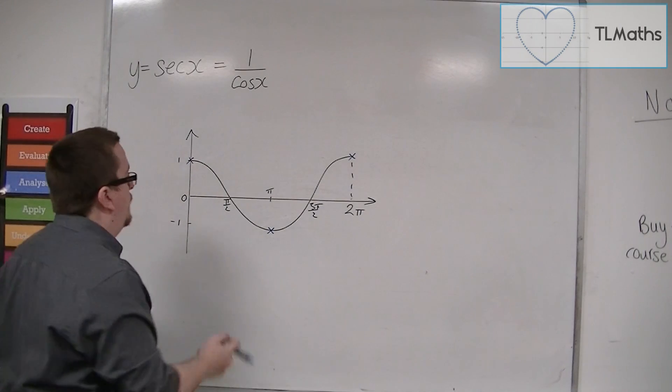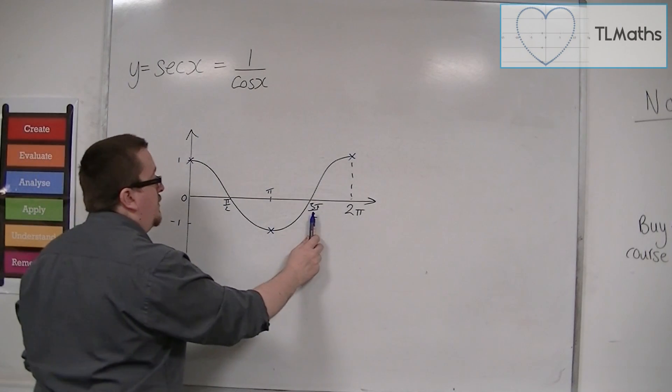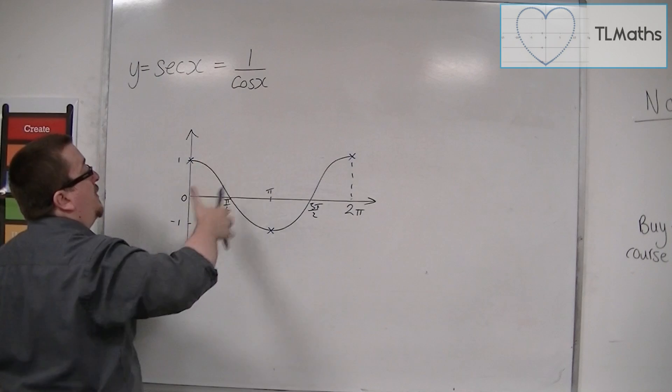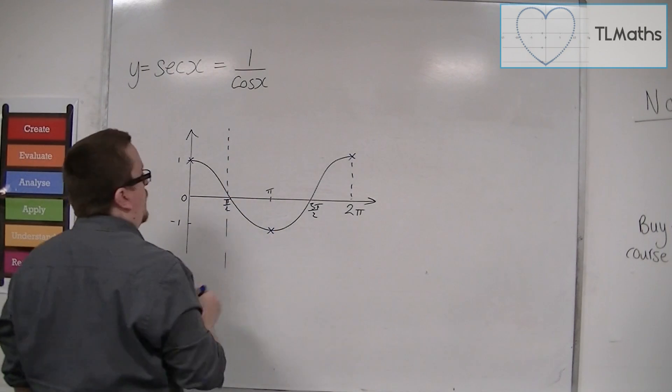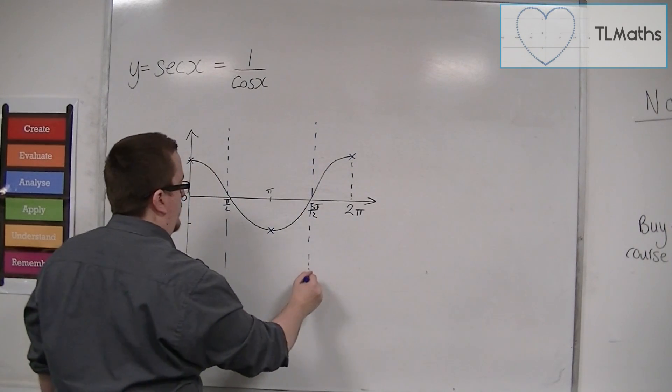When cosine is 0, so pi over 2 and 3 pi over 2, we must have 1 over 0. So we have asymptotic behavior there. So we have asymptotes at pi over 2 and 3 pi over 2.